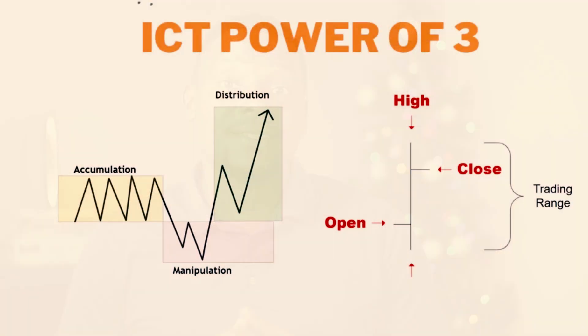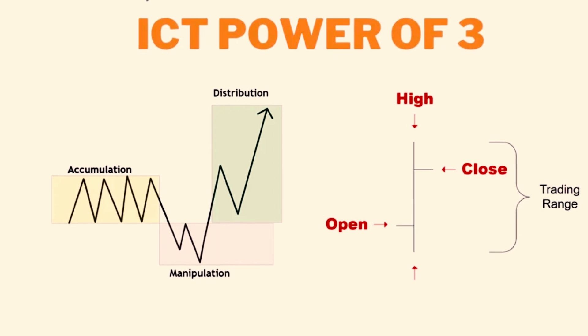If you've been struggling to pass prop firm challenges, this strategy will enable you to pass them from today onwards. It utilizes ICT's Power of Three, whereby price goes through three phases: accumulation, manipulation, and distribution. This is one of those great strategies that, if you employ it the right way, you're definitely going to become profitable and start passing your challenges.